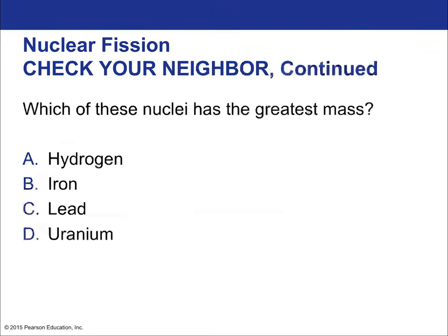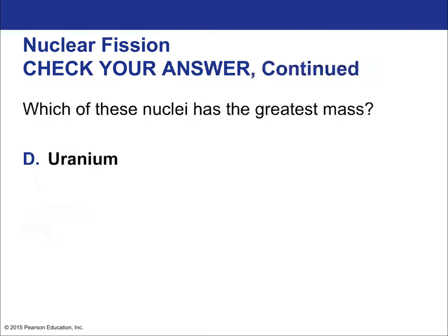Which of these nuclei has the greatest mass? Uranium, of course — it has 235 nucleons, giving it an atomic mass of 235, which you can convert to kilograms by considering the average weight of each nucleon.